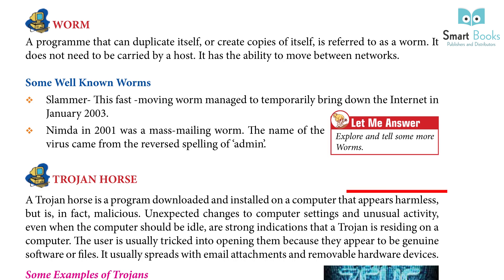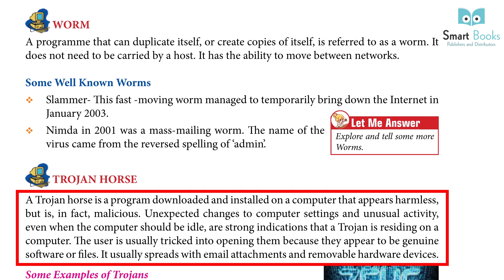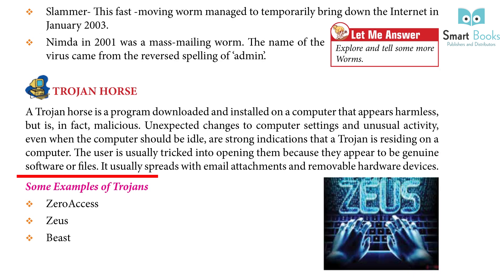Trojan Horse: a Trojan horse is a program downloaded and installed on a computer that appears harmless but is in fact malicious. Unexpected changes to computer settings and unusual activity, even when the computer should be idle, are strong indications that a Trojan is residing on a computer. The user is usually tricked into opening them because they appear to be genuine software or files. Trojans usually spread with email attachments and removable hard drives. Some examples: Zero Access, Zeus, Beast.